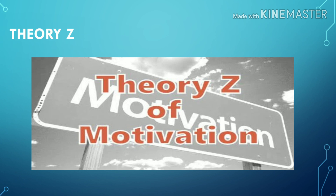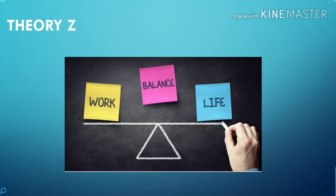The last one is Theory Z, proposed by William Ouchi. After making a comparative study of Japanese and American management practices, Theory Z was developed. This is an integrated model of motivation. There are four assumptions in Theory Z: build cooperative relationships, develop skills, collective decision-making, and self-discipline.